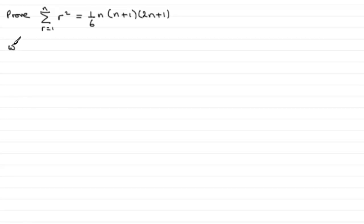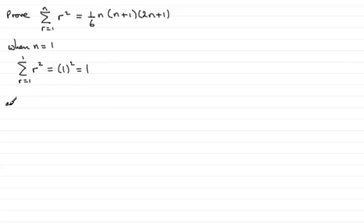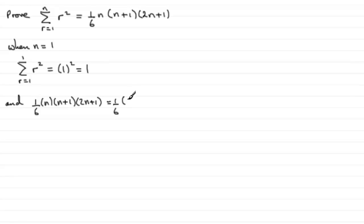When n equals 1, we have the sum of r squared from r equals 1 to 1, which equals simply 1 squared, which is clearly 1. Now we check whether the right hand side also comes to 1 when we substitute 1 in for n: one sixth multiplied by 1 multiplied by 2 multiplied by 3, and indeed we do get 1. So it is true when n equals 1.